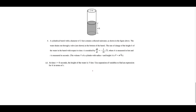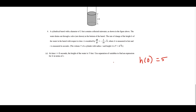For this last part, we use separation of variables to find an expression for h in terms of t, given the initial condition that at t equals 0 the height is 5 feet. In function notation, h(0) equals 5. We write our original equation: dh/dt equals negative 1 over 10 times the square root of h, and proceed with separation of variables.